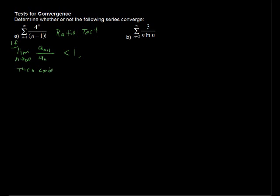And you've guessed it, if it's greater than 1 it diverges, and if it equals 1 then we say we just have to use a different test. The ratio test doesn't give us enough information if this ratio does equal 1.